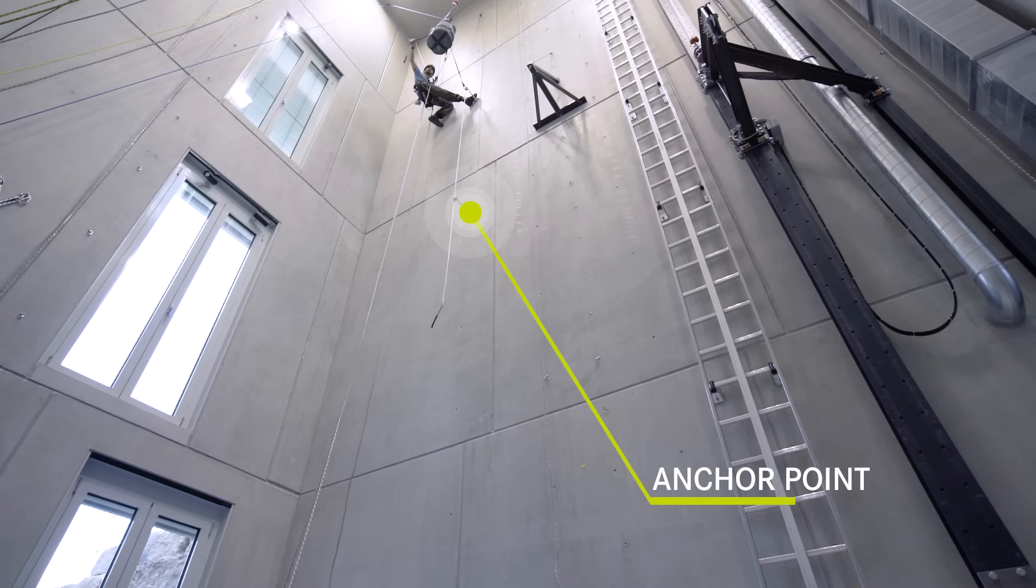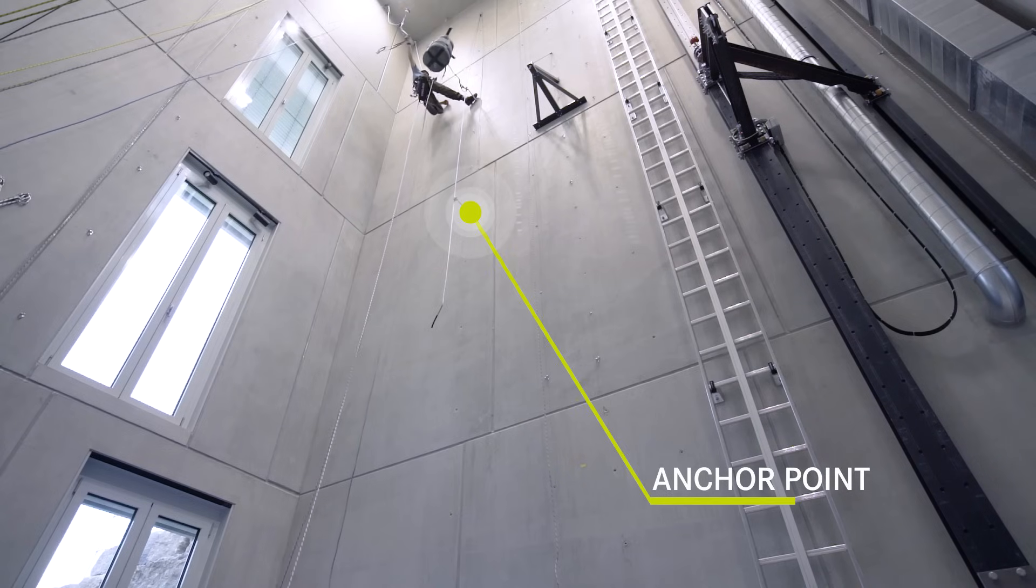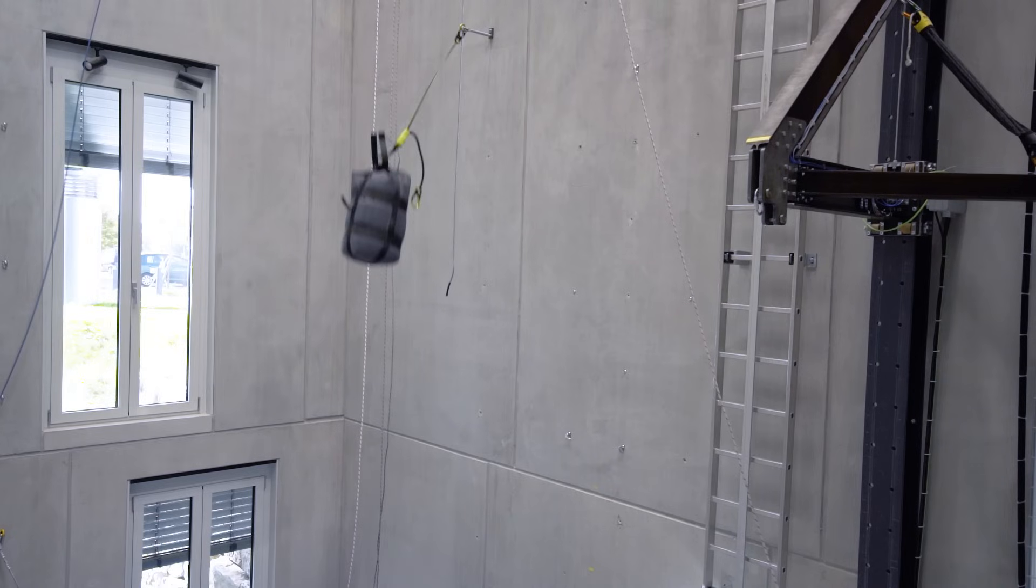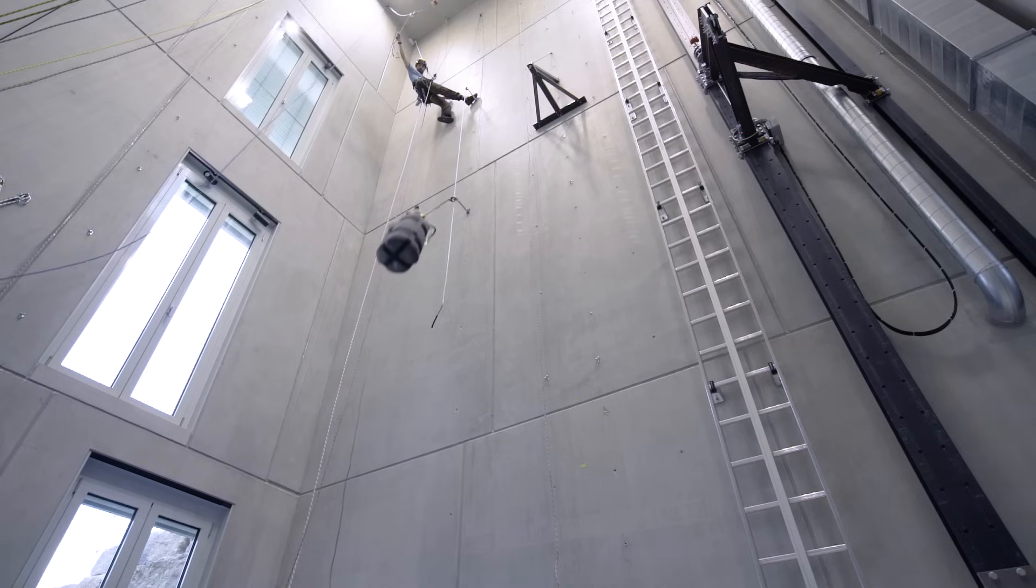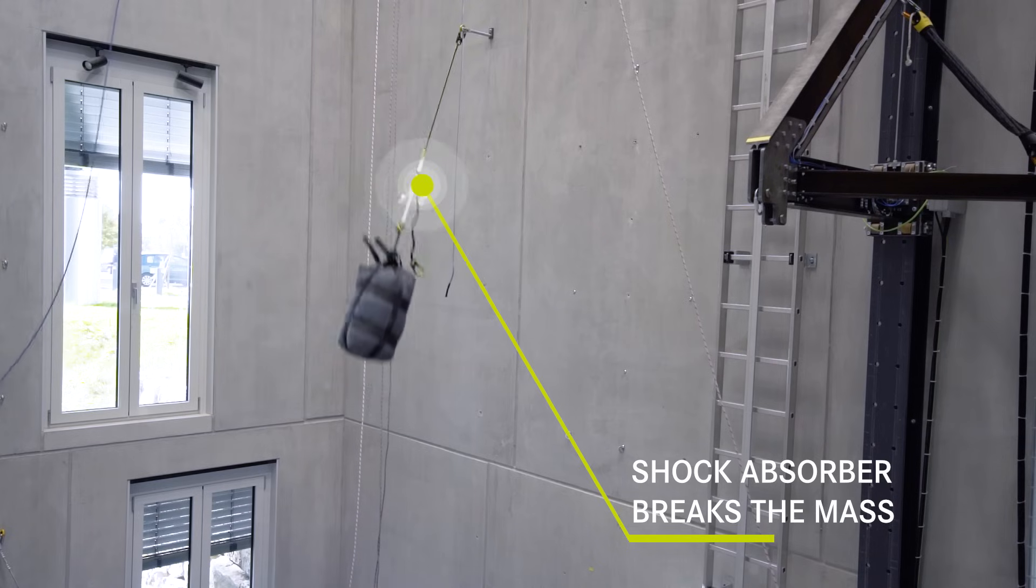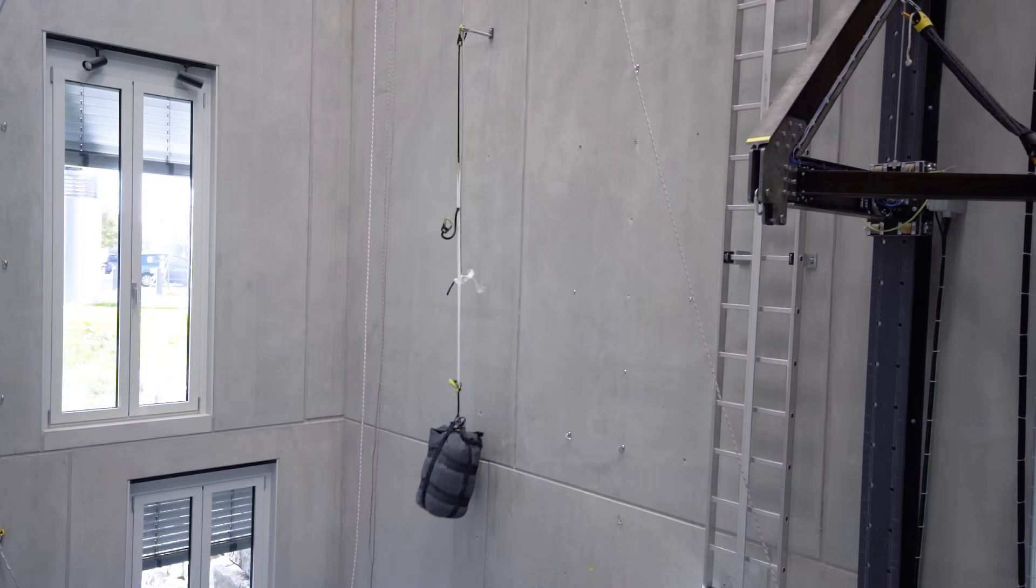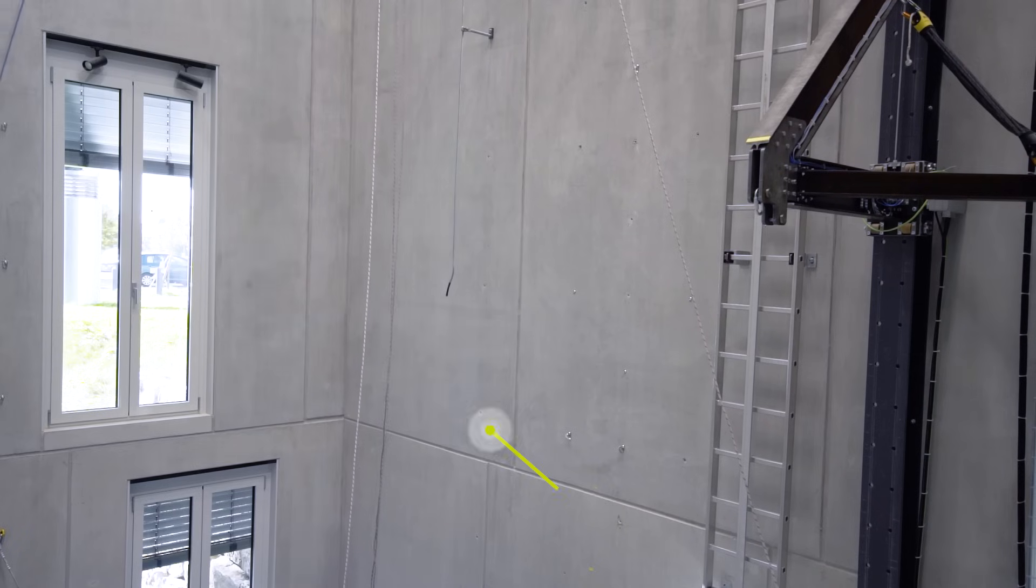There are three stages. First, the mass falls free along the steel cable until the lanyards are coming under load at the next anchor point. At the second stage the shock absorber works and brakes the mass. And third, the mass hits the wall.